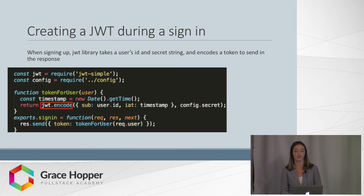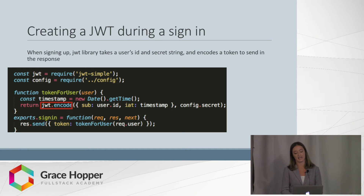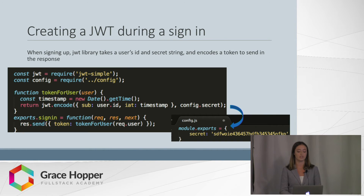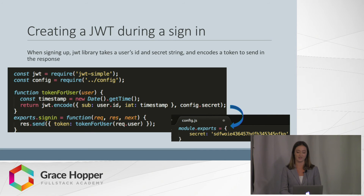The encode method from this library has the first argument of an options object with the sub key, or subject, which is the user, and an IAT key, or issued-at-time, property with the timestamp. The second argument is the user's secret string imported from the config.js file shown at the bottom right, which you should add to your gitignore so that it will not be shared or leaked, because someone that got ahold of it could use it to decrypt your token.